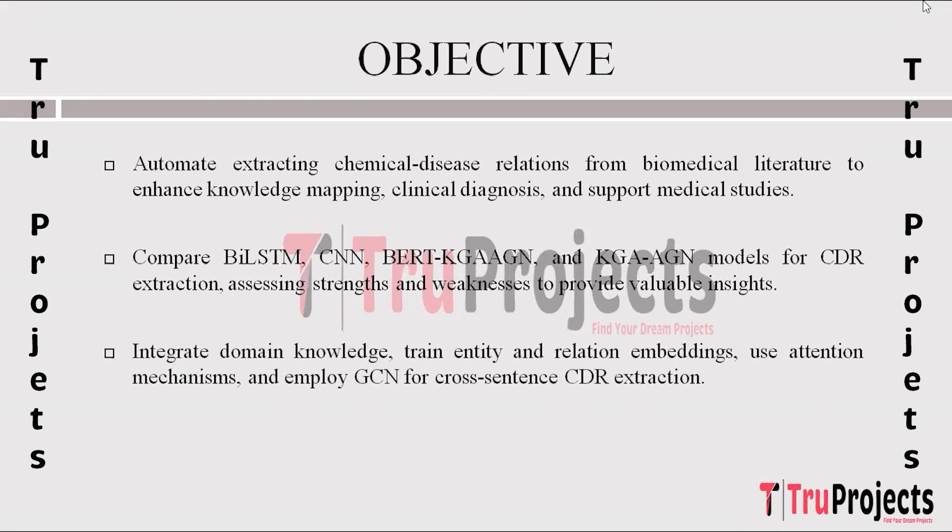The project aims to enhance chemical disease relation extraction by integrating domain knowledge. The focus is on training entity and relation embeddings, where the model learns to represent chemical and disease entities in a continuous vector space. Employing attention mechanisms, the model captures weighted contextual information. Additionally, Graph Convolutional Networks (GCN) facilitate encoding of document-level syntactic dependency graphs, crucial for accurate cross-sentence CDR extraction.